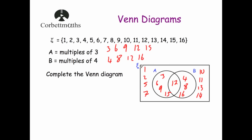Whenever you're doing a Venn diagram question, I always recommend you check you've got all the numbers. We've got the numbers 1 to 16, so 16 numbers in total. Counting through, we've got 16 numbers in the diagram — so we've completed the question. That's how a Venn diagram works: numbers in A, numbers in B, the middle where they overlap for A and B, and anything outside is not in A or B.